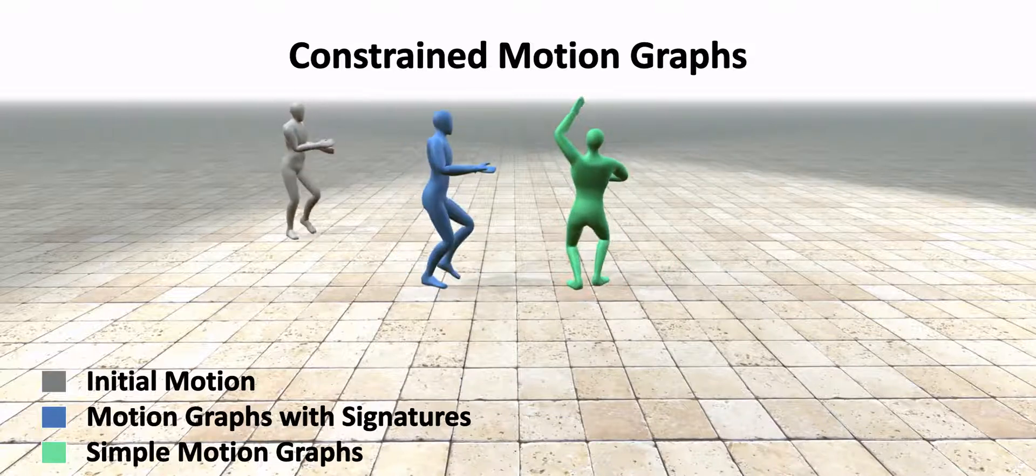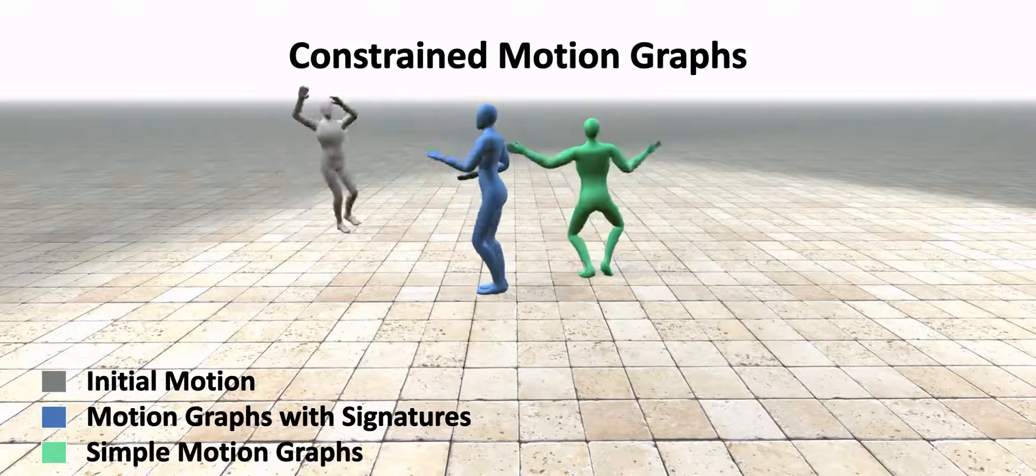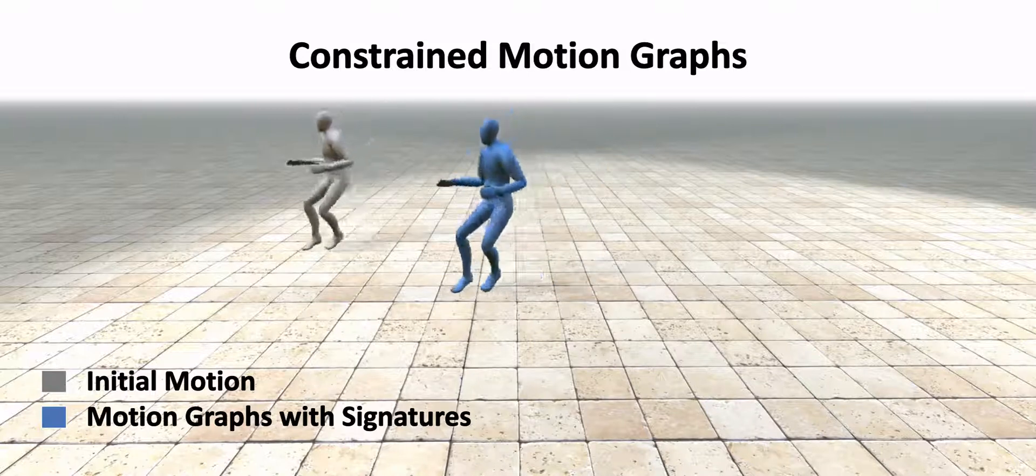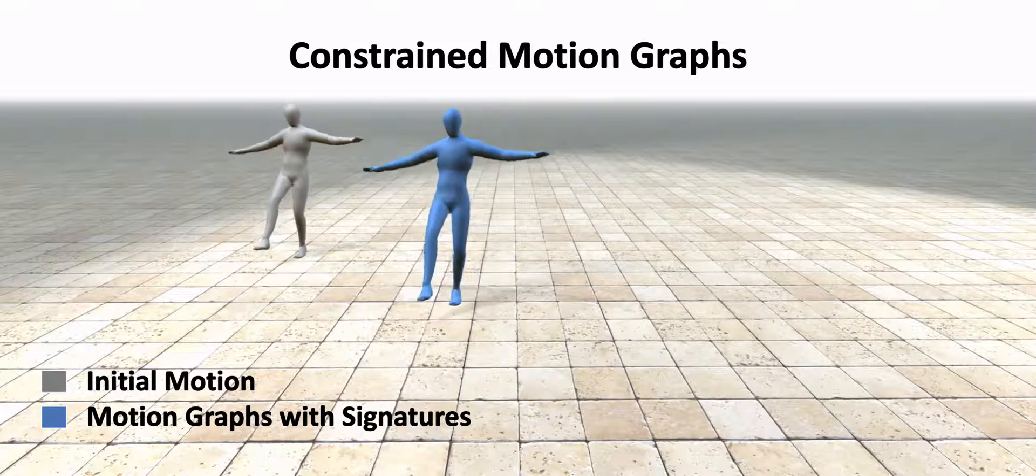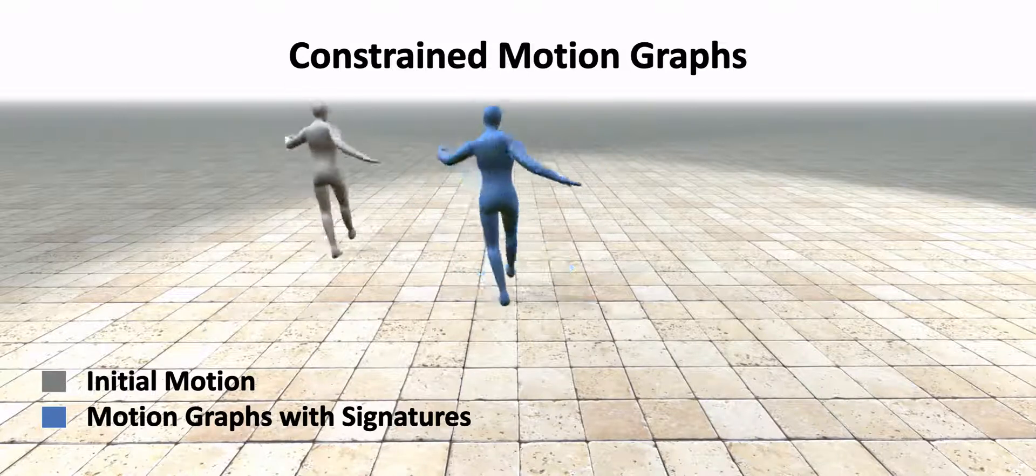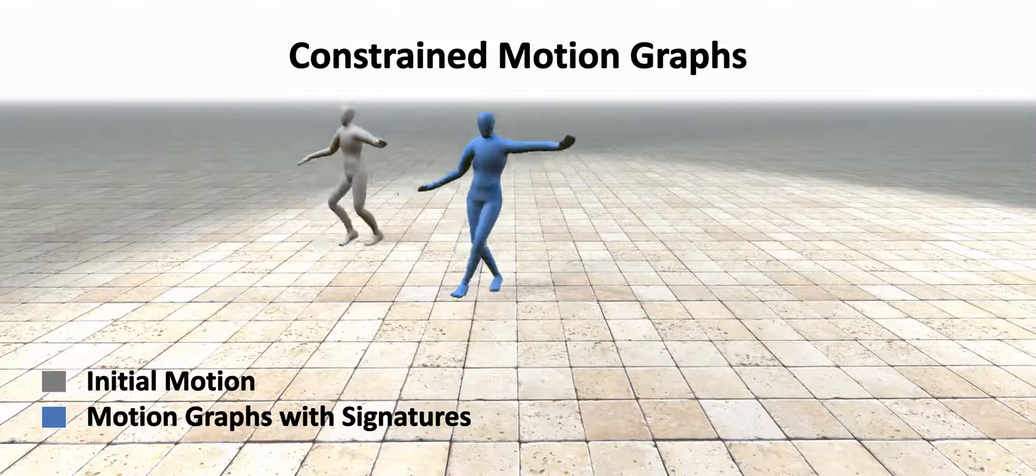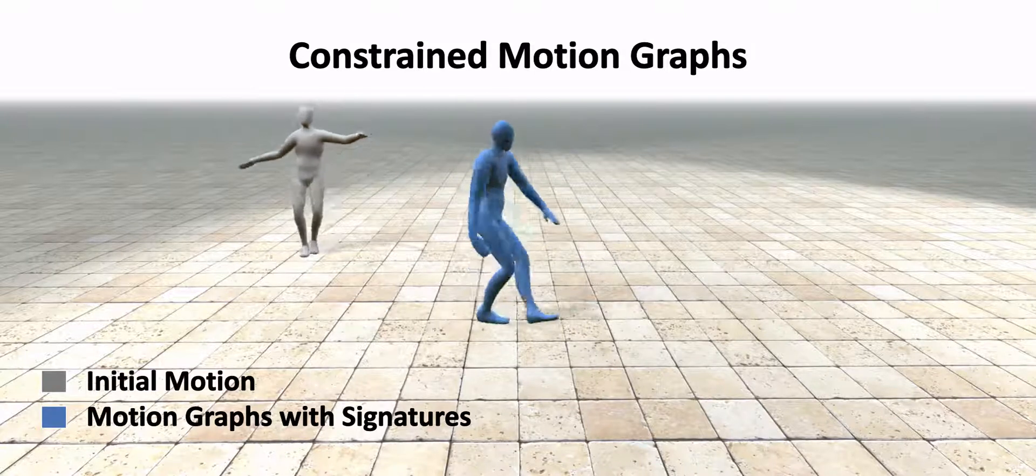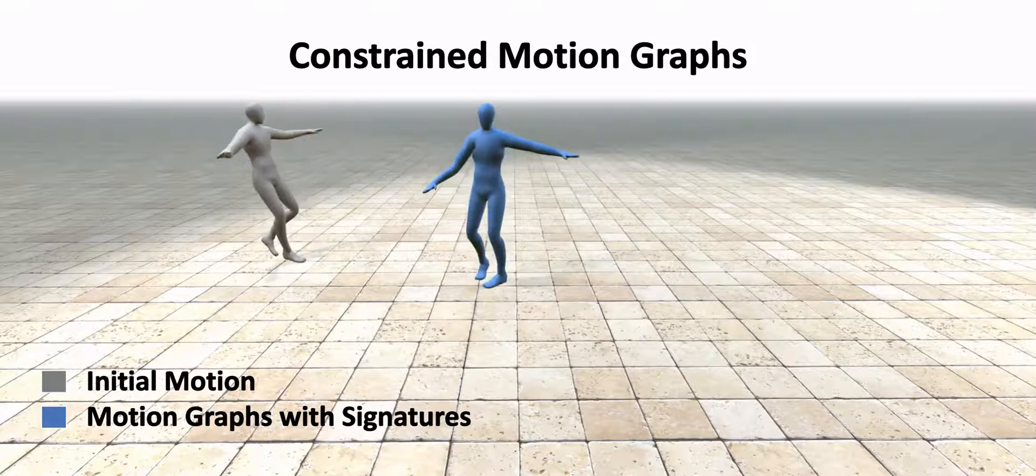Using signatures, we can constrain the synthesized motion to remain contextually consistent and produce more coherent results. In this example, we continuously synthesize a Greek-style dance.